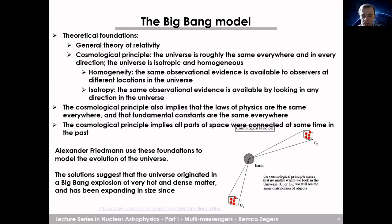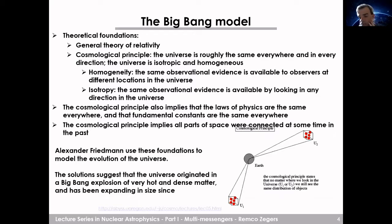The cosmological principle also implies that the laws of physics and the fundamental constants are the same everywhere — if that were not the case, things would be very difficult to figure out. It also implies that all parts of space were connected at some point in time. Alexander Friedman used these foundations to model the evolution of the universe, and the solutions suggest the universe originated in the Big Bang as very hot and dense matter that has been expanding ever since.